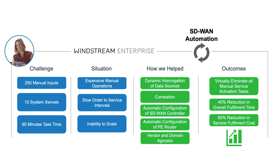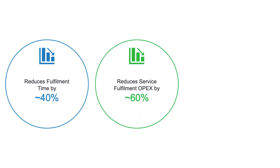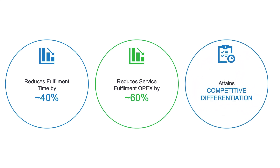When we look at the business value and benefits: Blue Planet SD-WAN automation enables incremental revenue and increases customer satisfaction by reducing fulfilment time by up to 40%. With automation, it also reduces service fulfilment OPEX by 60%, largely by eliminating manual activation tasks. And finally, it attains competitive differentiation by eliminating vendor lock-in, with a vendor-neutral solution that integrates with OSS-BSS via common APIs, and by enabling unique overlay and underlay closed-loop assurance.